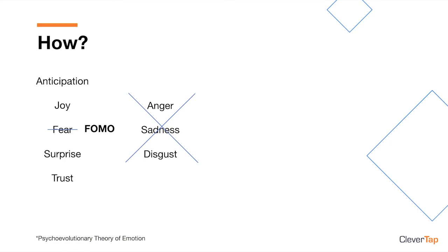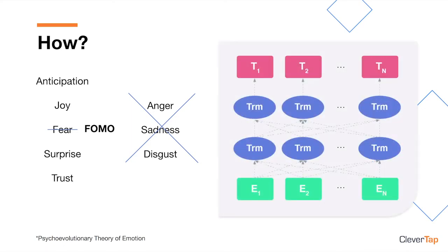Now that we had a framework for emotions, the next challenge was to develop a model capable of translating messages into emotions. This is where we used a powerful natural language processing model called BERT, developed by Google. We augmented this model further with our own proprietary algorithm to derive emotions in the marketing copy.